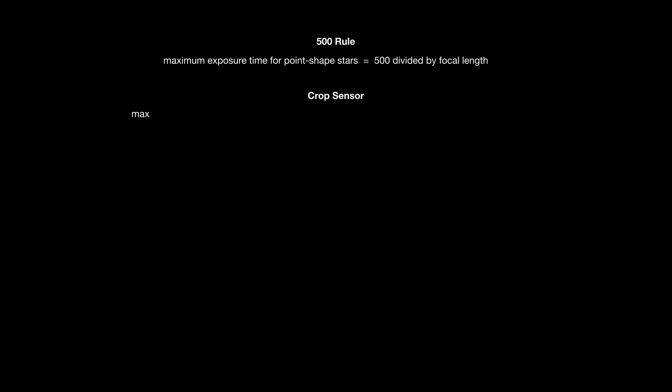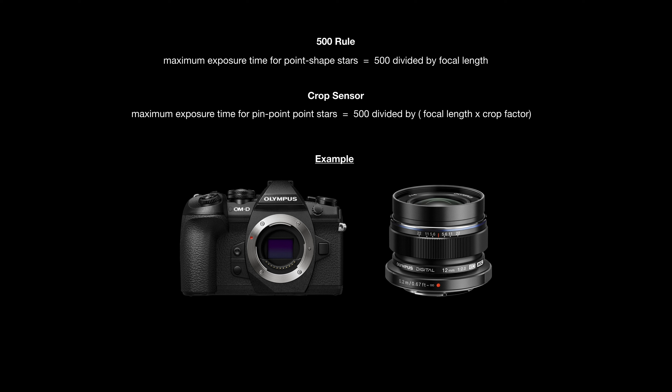I want to do a little technical discussion on what Google might be doing to create these astonishing pictures. The first thing people find when they search is the so-called 500 rule. It gives the maximum exposure time for point-shaped stars: you take 500 and divide it by the focal length. For a crop sensor camera you adjust by the crop factor — so you take 500 divided by the product of the focal length and the crop factor.